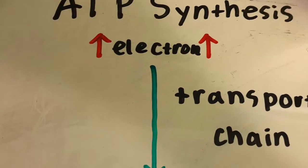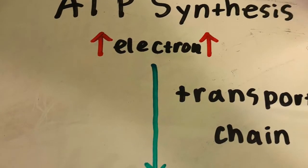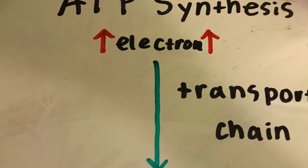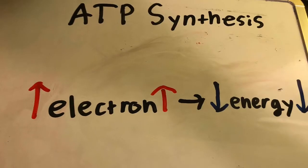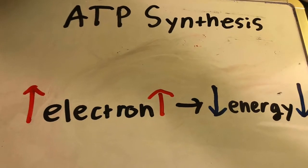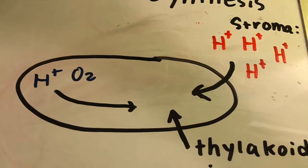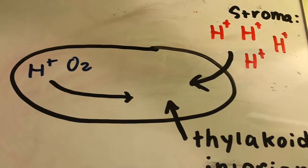The second part of the light reaction process is ATP synthesis, where the high energy electrons travel down an electron transport chain, which causes them to lose energy as they go. Some of the released energy drives pumping of H plus ions from the stroma into the thylakoid interior, building a gradient.